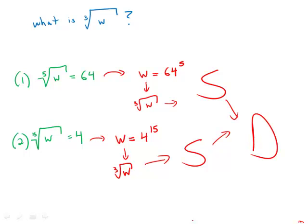And incidentally, if you are curious, 4 to the 15th or 64 to the 5th both happen to equal 32,768, and the cube root of that is 32. But you do not need to do any of those calculations in order to answer the data sufficiency question.